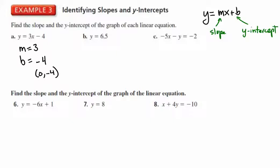In the next one, example b, we have an equation that doesn't have an x-term. Some students like to rewrite that as y equals 0x plus 6.5 because that helps them see there actually is an x-term, but it's multiplied by 0, which means the slope is 0.